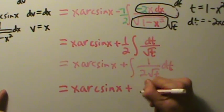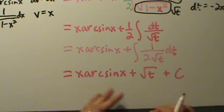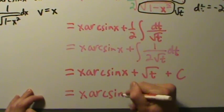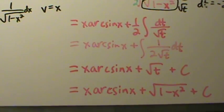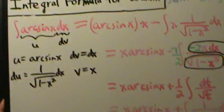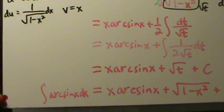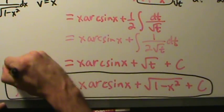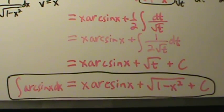So the result is x arc sine of x plus the square root of t, plus an arbitrary constant. Now we substitute back: t equals 1 minus x squared. So the final answer is x arc sine of x plus the square root of 1 minus x squared plus C. That's the integral formula for the inverse sine of x. More integral formulas for inverse trig functions are coming up in the next few videos.